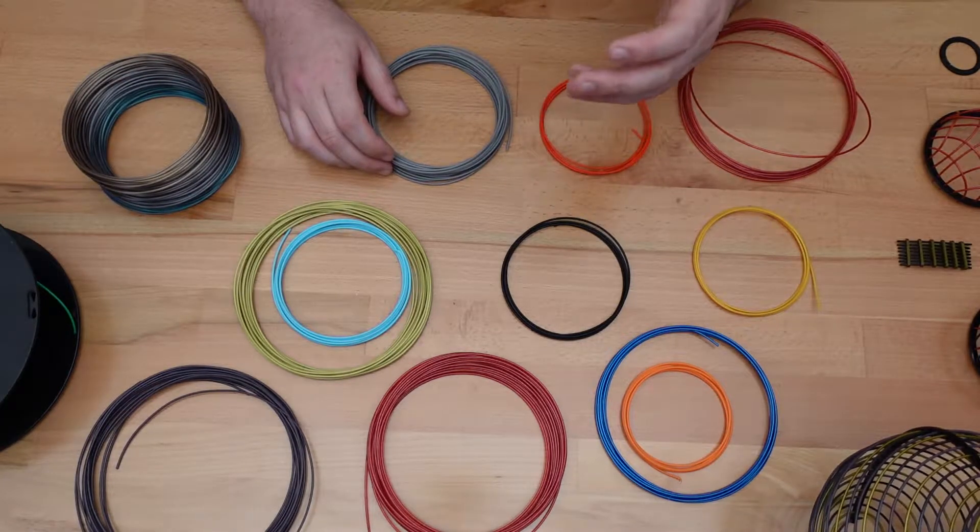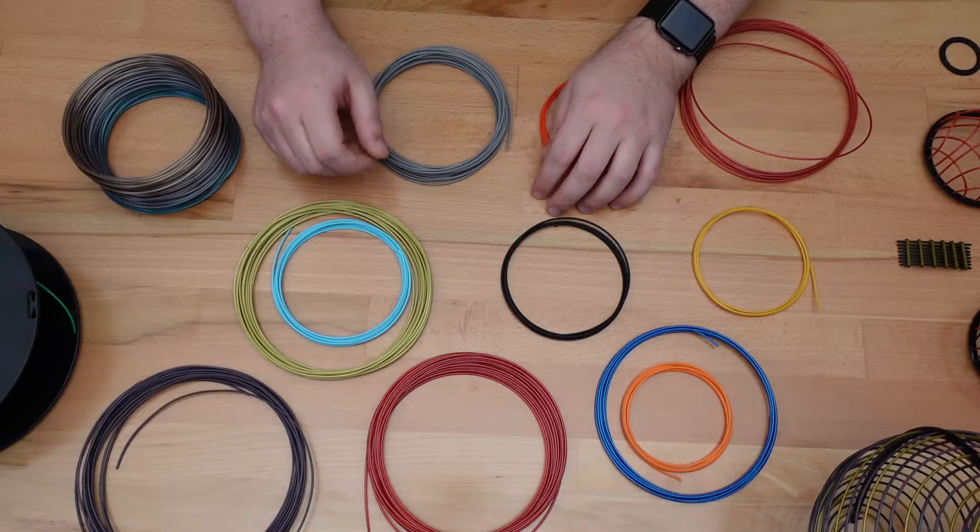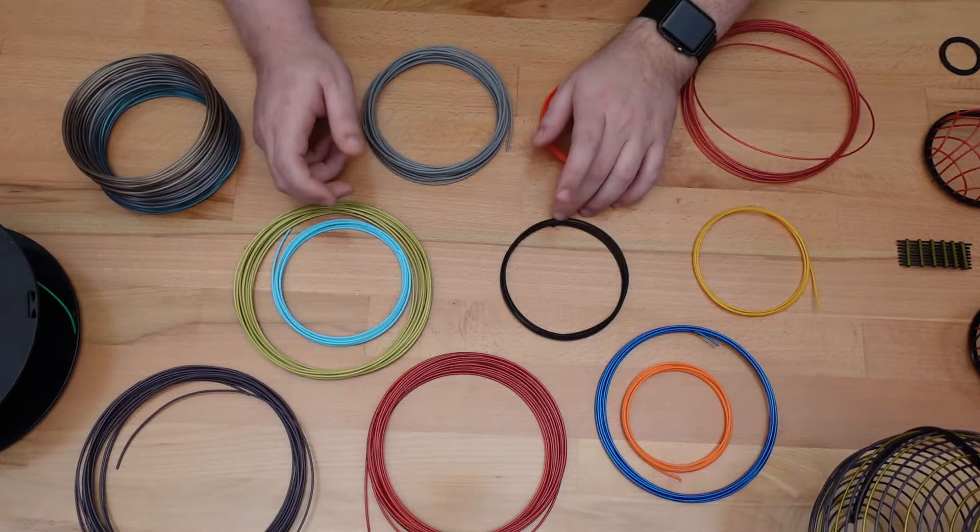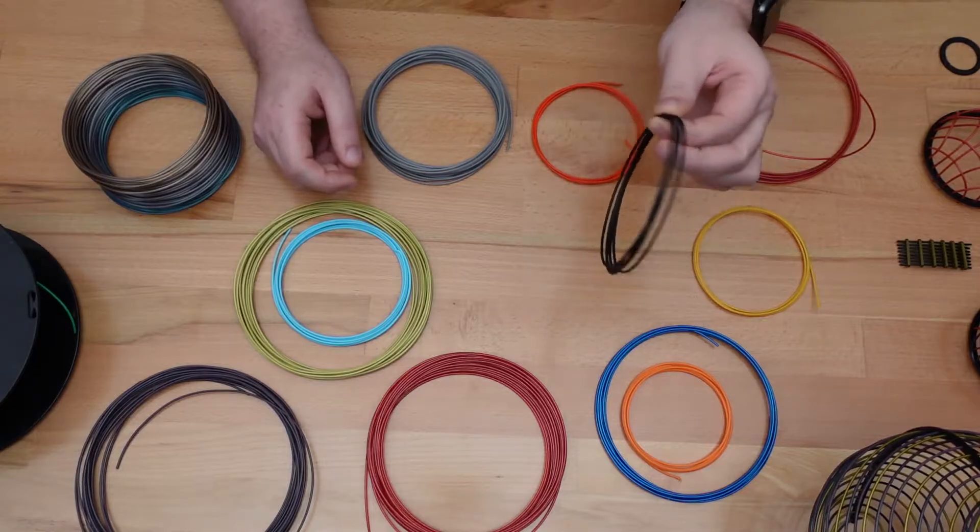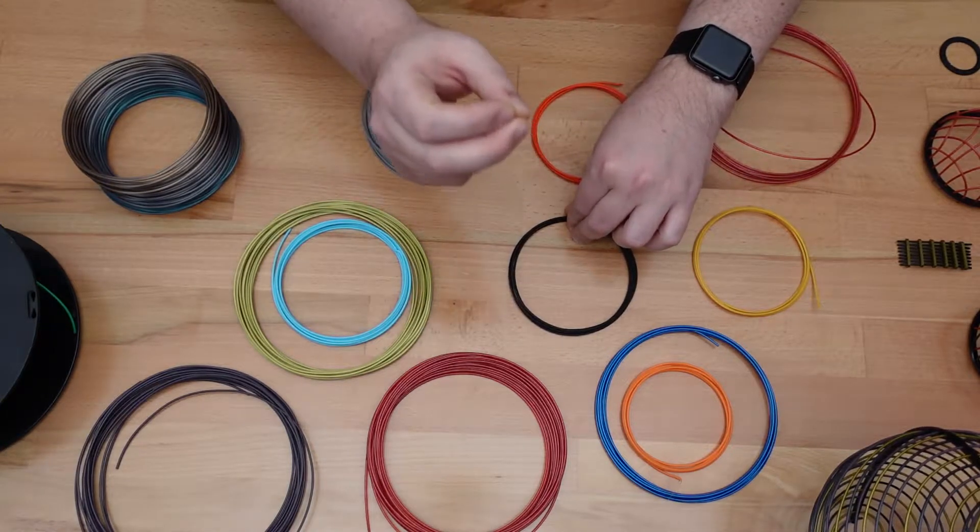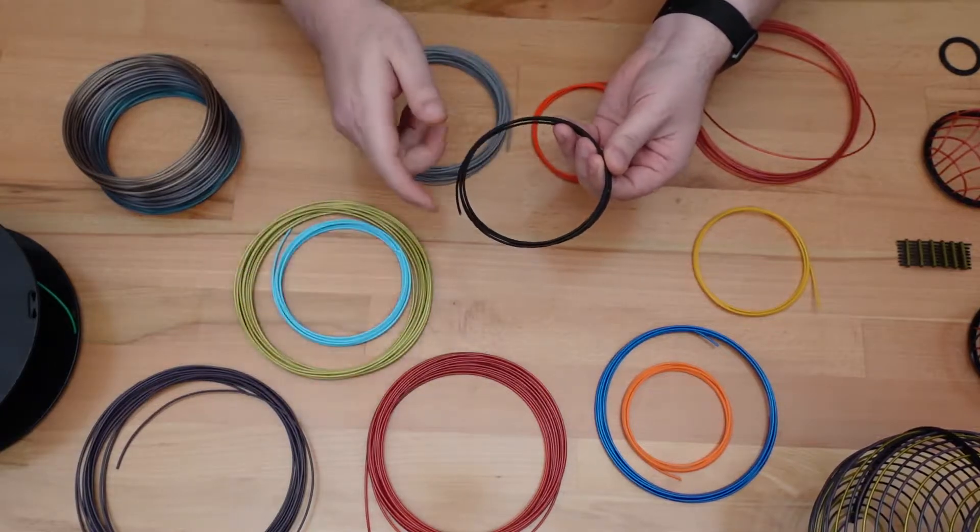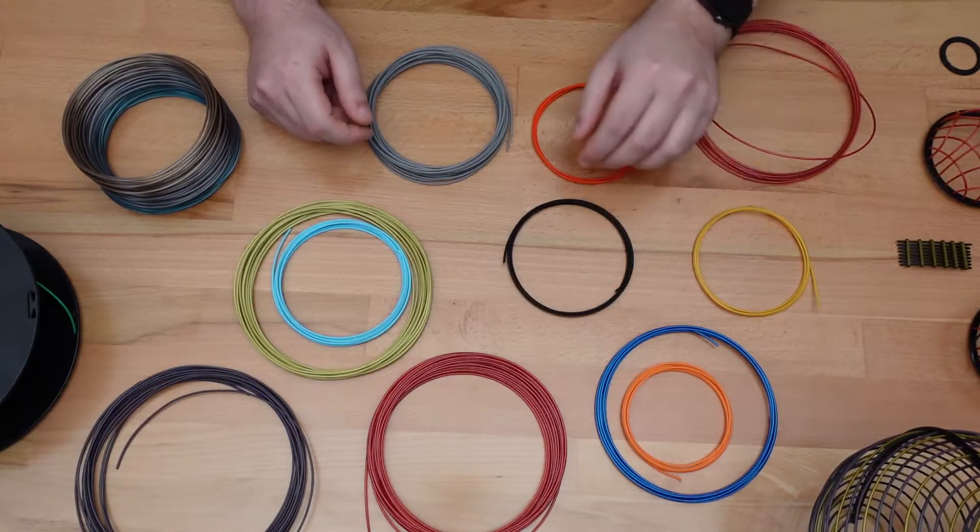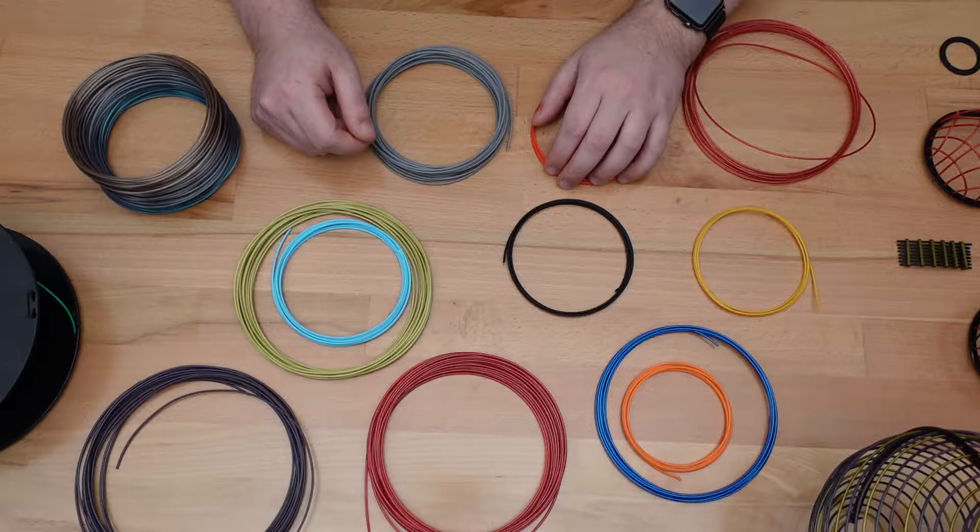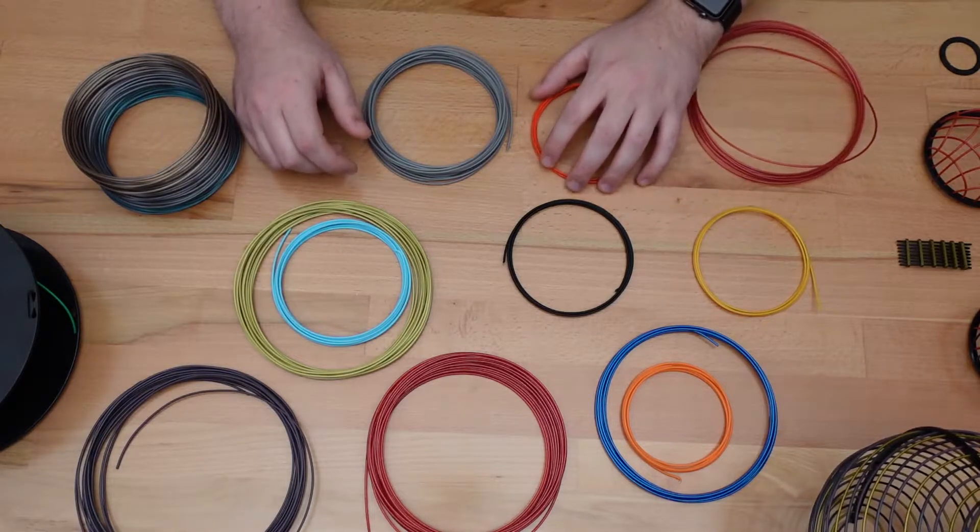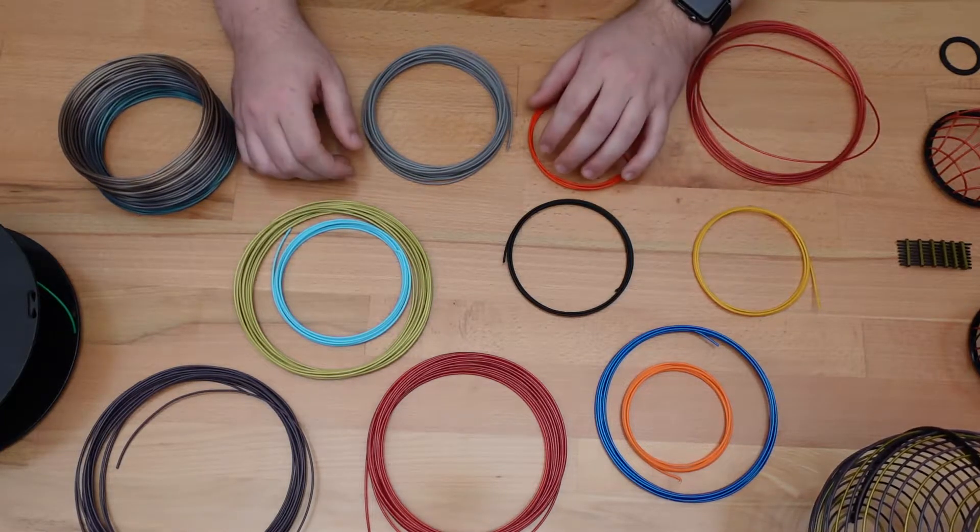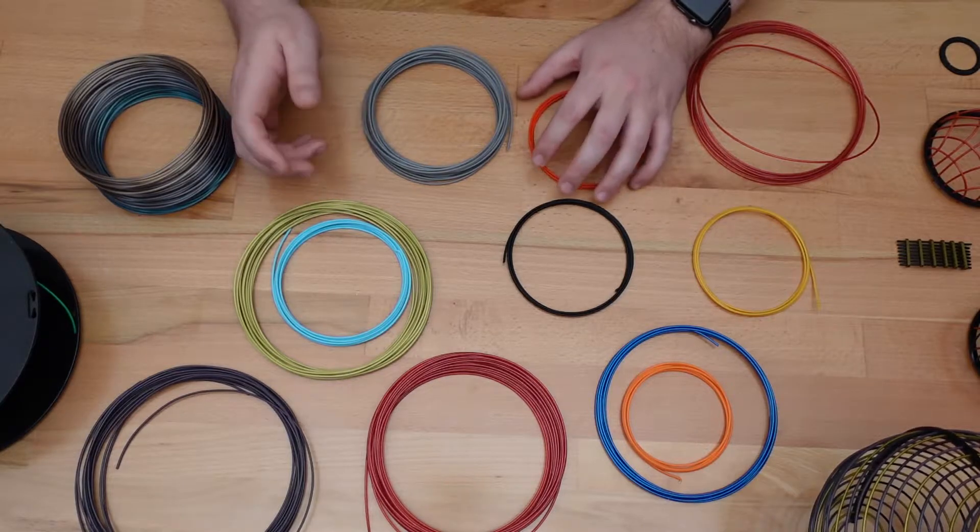If I need to level a bed or clear through a printer clog, rather than use filament that I care about, I'll grab one of these and use it to either shove the clog through the nozzle or to print leveling squares on the bed. But those situations don't come up that often, and I still amass a huge collection of these little bits of filament. So what can I use them for?